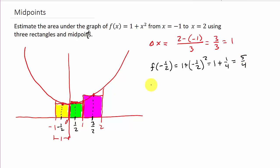And then we need the height of the next rectangle. Well, the x value to get this height here is one-half. So f of one-half is equal to 1 plus one-half squared. And it's going to be the same as this one. And that's going to give me five-fourths.